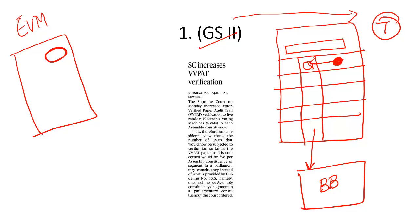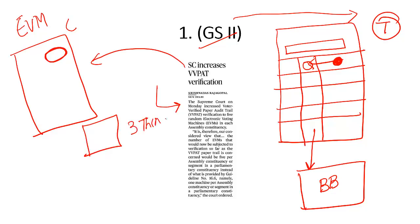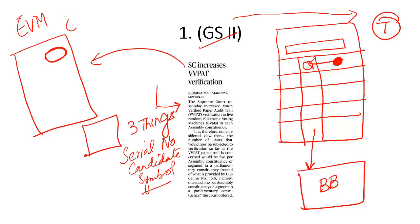Then the Election Commission of India devised a tool called VVPAT — Voter Verifiable Paper Audit Trail. This is just like a printer connected with the electronic voting machine. When I press the button on the EVM, the screen displays three things — very important for your prelims examination: number one, the serial number of the vote; number two, the name of the candidate; and number three, the symbol of the political party.